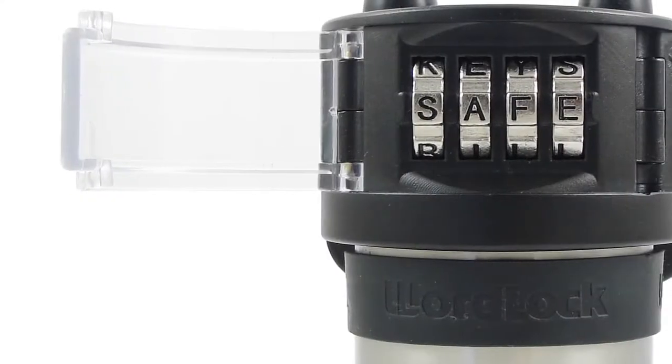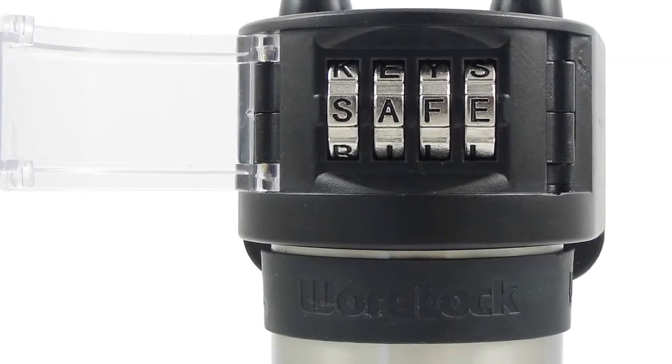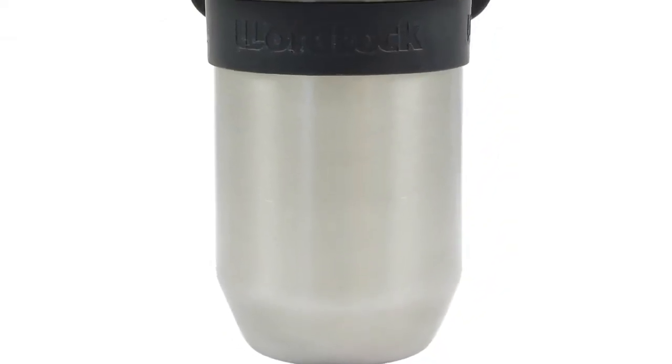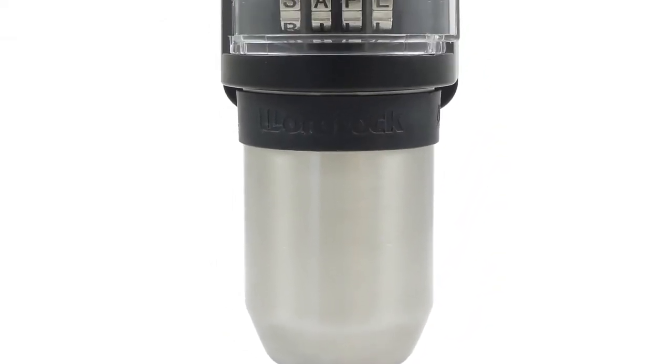The Stormore key safe has a solid aluminum head and a stainless steel body built to withstand hammering and sawing. It is non-corrosive and rust resistant.